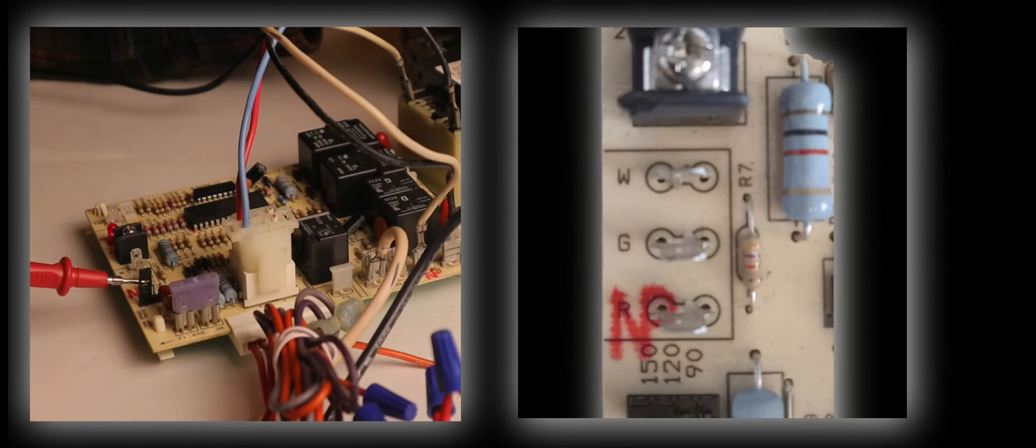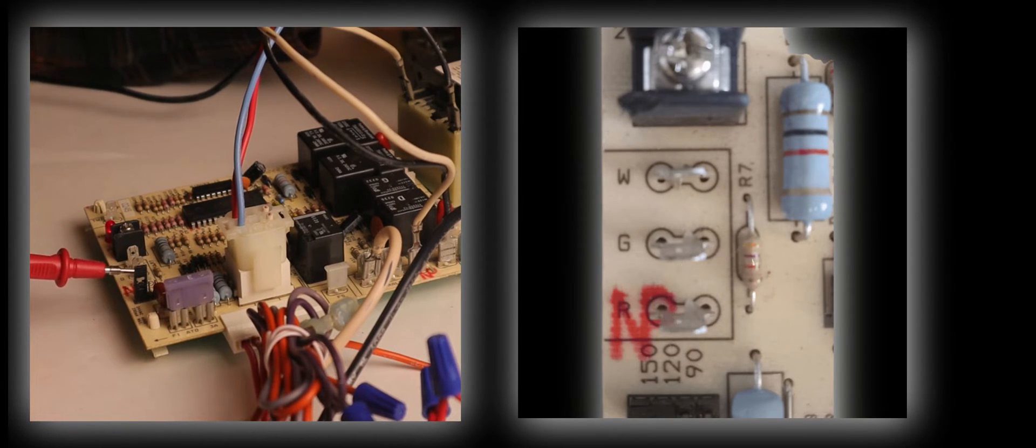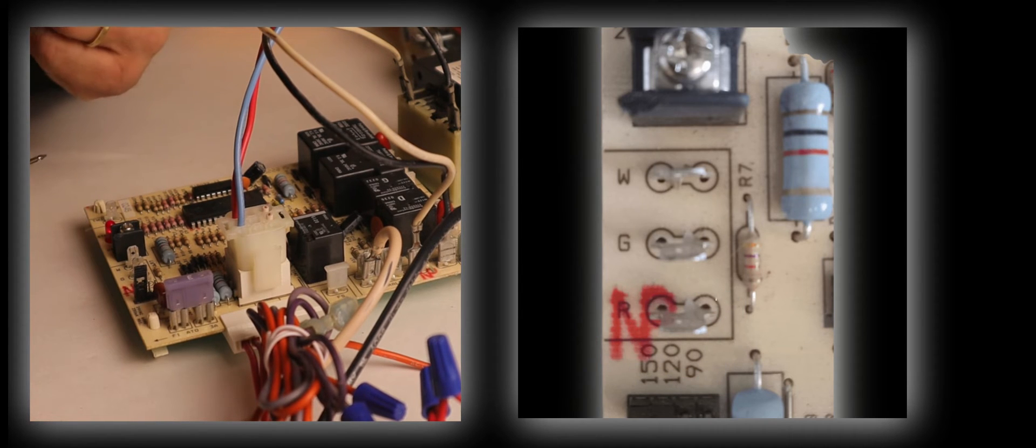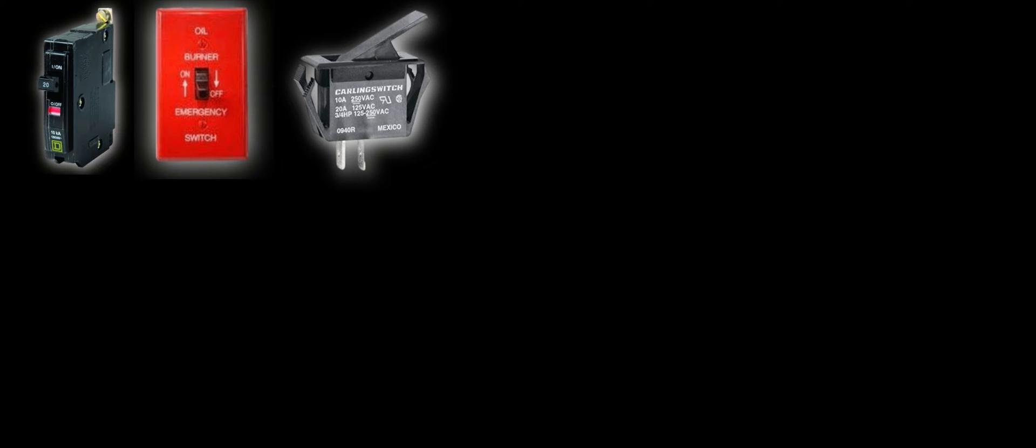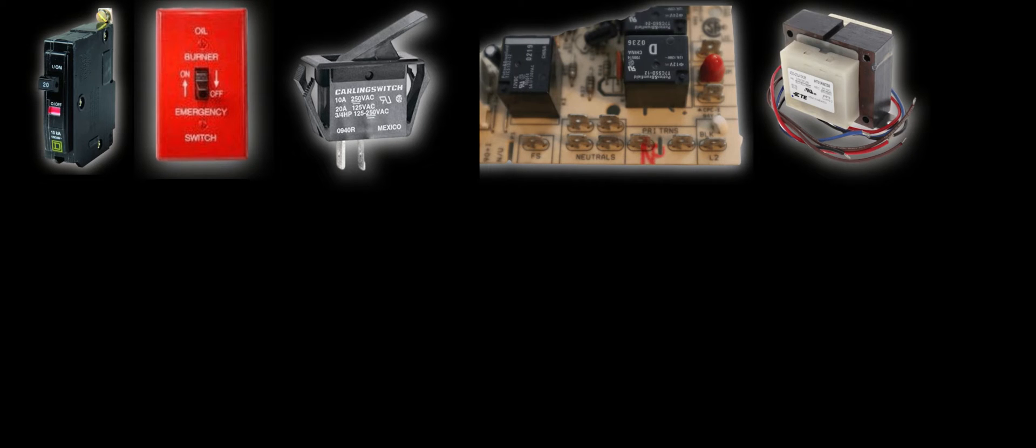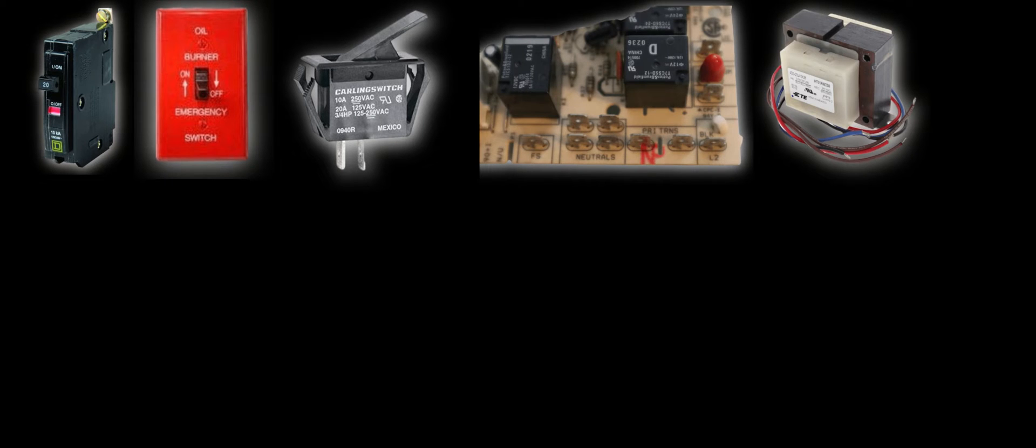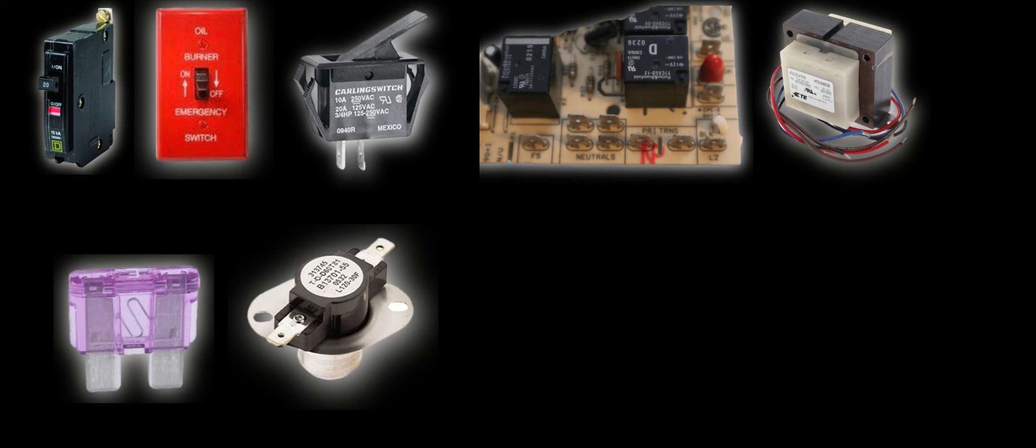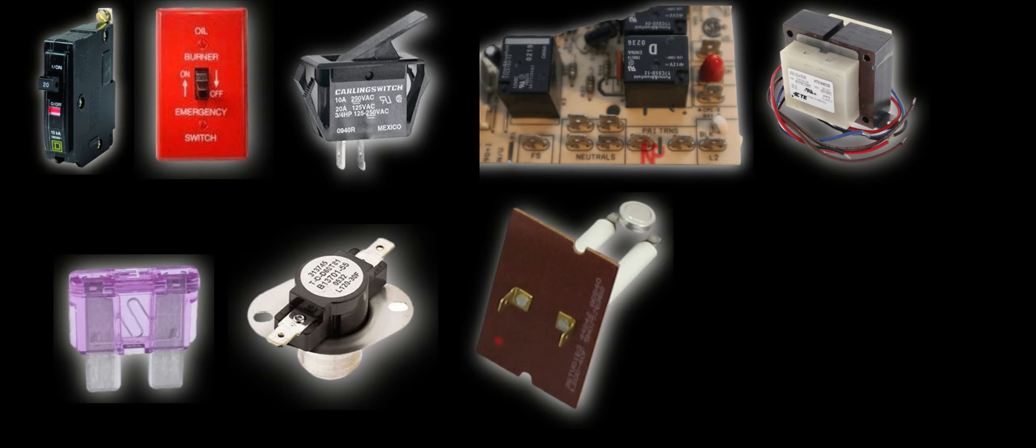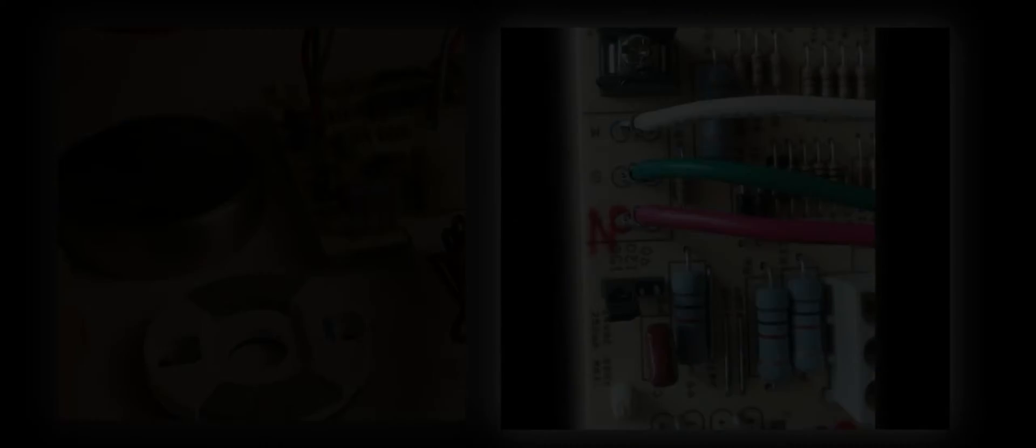The next place I find power is on the R terminal where I get my 27 volts. This is where the thermostat wiring gets hooked in. So burner switch, door switch, control board, primary on the transformer, secondary on the transformer, fuse goes to our fan limit switch, the high limit switch, and now finally to our R terminal. Let's wire in a thermostat.